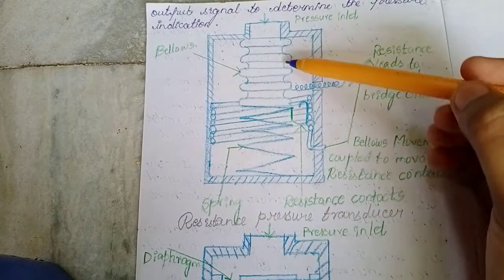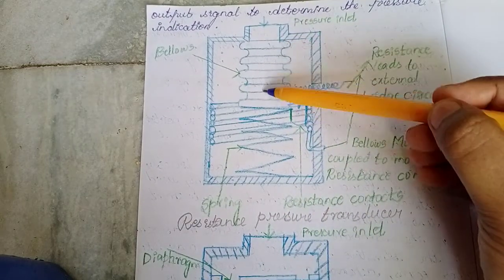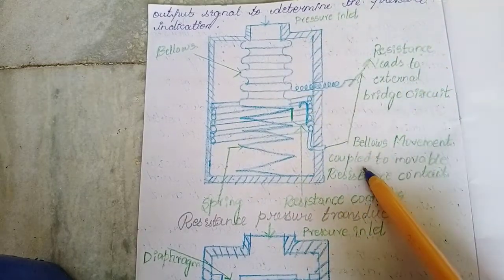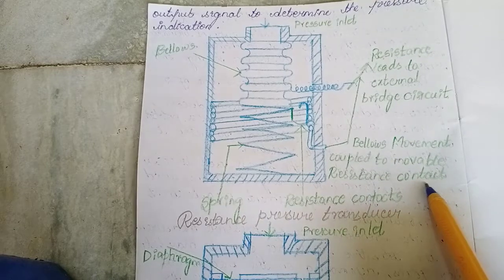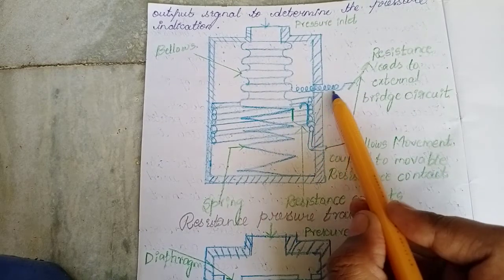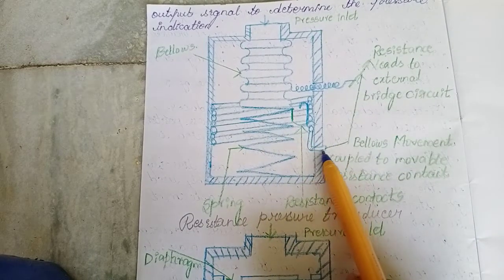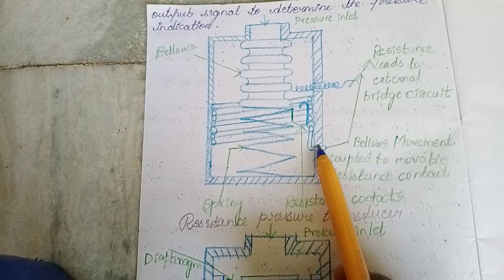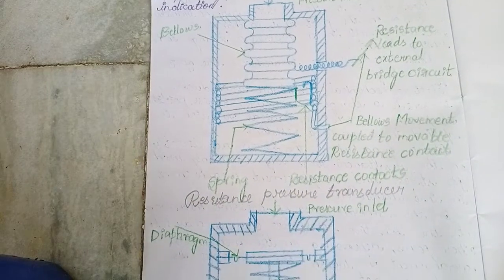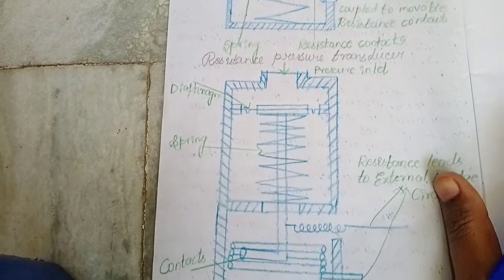The bellows movement is coupled to the movable resistance contacts — both this contact and this contact are movable resistance contacts. This is the bellow-type resistive pressure transducer.